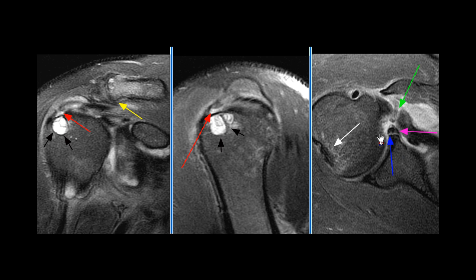A Bankart lesion is seen with an avulsion of the anterior inferior labrum and a small anterior inferior glenoid rim fracture fragment. There is cancellous marrow edema in the posterolateral humeral head consistent with a Hill-Sachs lesion.